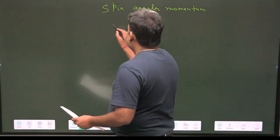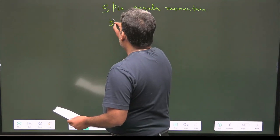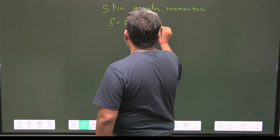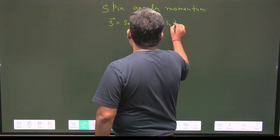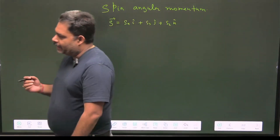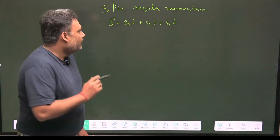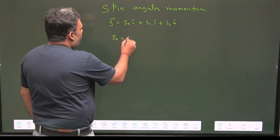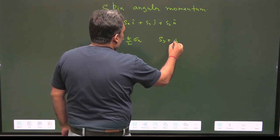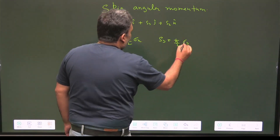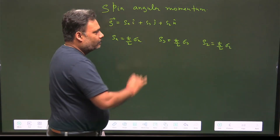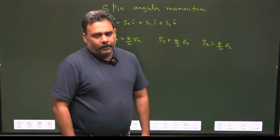The spin operator S can be written as Sx î + Sy ĵ + Sz k̂. Now Sx is nothing but (ℏ/2)σx, Sy is (ℏ/2)σy, and Sz is (ℏ/2)σz, where σx, σy, and σz are the Pauli spin matrices.